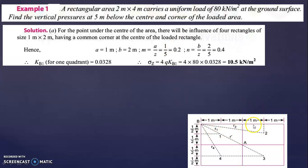The given rectangle is 2 meter by 4 meter. When you mark the center, you can see there are 4 rectangles of size 1 meter by 2 meter, all having a common corner at the center. To find the stress at the center, I will take one of these rectangles and then multiply the result by 4 to get the total vertical stress.